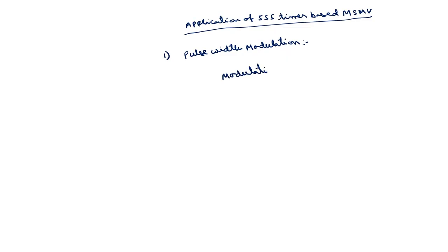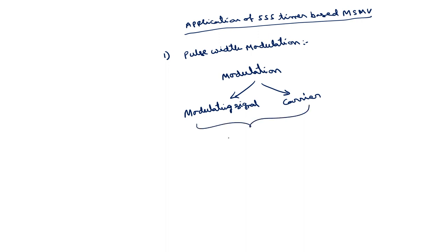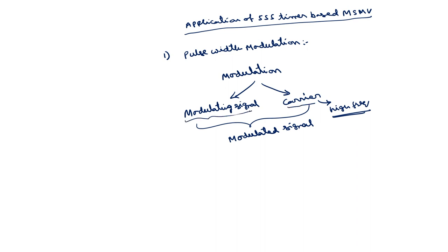In pulse modulation systems, there will be a modulating signal and a carrier — as in any modulation. One signal is called the modulating signal, and the other is the carrier. After combining these two, the resultant signal is called the modulated signal. Normally, the carrier is a high frequency signal compared to the modulating signal, so that it can propagate over long distances. The carrier is going to carry the modulating signal, which is the information signal.